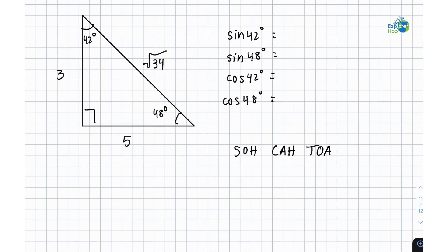Now first we're starting off with sine of 42 degrees. 42 degrees is over here which means the opposite side, which is the side that is not this one, is going to be 5. So sine of 42 degrees is going to be opposite which is 5 over hypotenuse, the longest side, which is root 34.